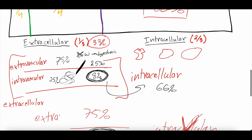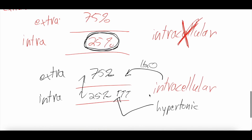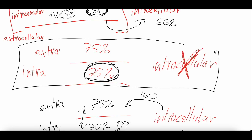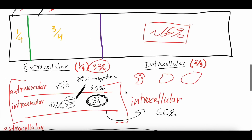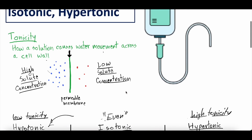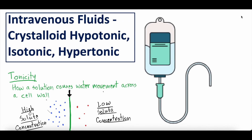You should never resuscitate someone with a hypotonic fluid — only 8% stays intravascular. You also shouldn't resuscitate with a hypertonic fluid because it pulls volume from inside cells, which can damage them. You always want to resuscitate with an isotonic fluid, even knowing that only 25% of that fluid stays inside the blood vessel. Hopefully that was helpful — let us know your thoughts, comments, and questions below. Subscribe, hit the bell button, and check out our Patreon page. Stay well, keep learning — we'll see you next time.